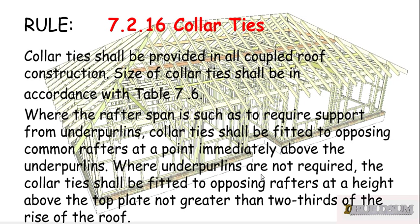Rule 7.2.16 says that Collar Ties shall be provided in all coupled roof construction, and the size of the Collar Ties shall be determined in accordance with Table 7.6. Where the rafter span requires support from under purlins, Collar Ties shall be fitted to opposing common rafters at a point immediately above the under purlins. Where under purlins are not required, Collar Ties shall be fitted to opposing rafters at a height above the top plate not greater than two thirds of the rise of the roof. So either just on top of your purlin, or not more than two thirds of the rise of the roof up the rafters.